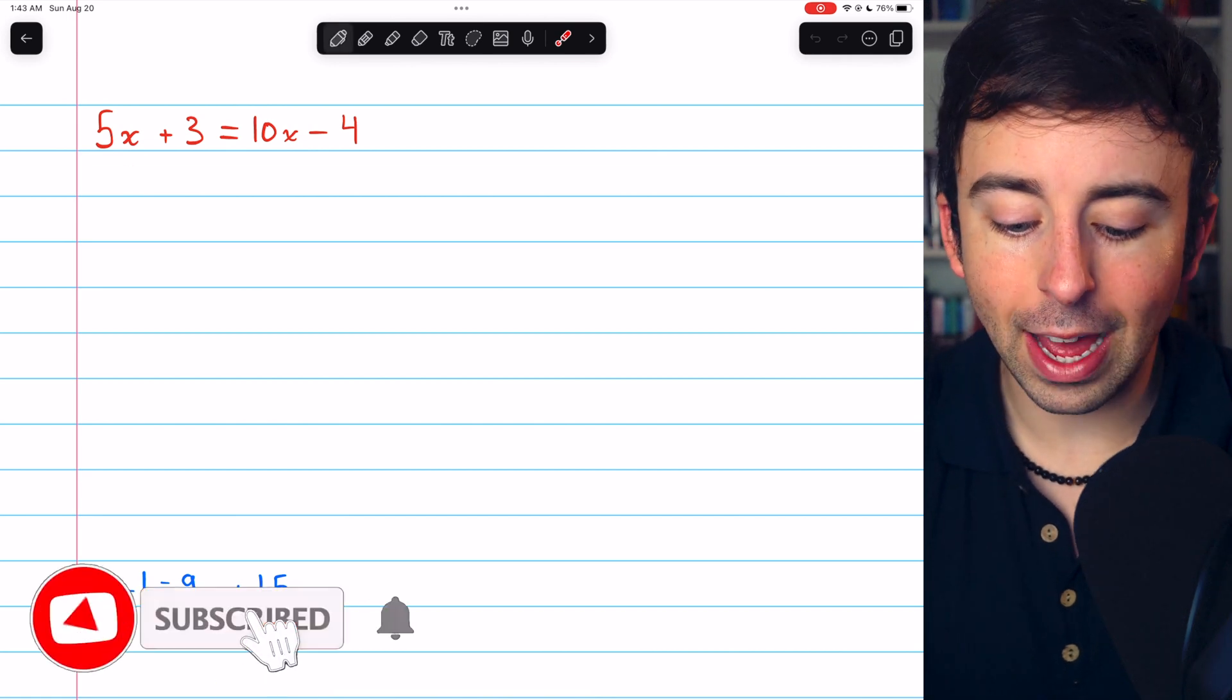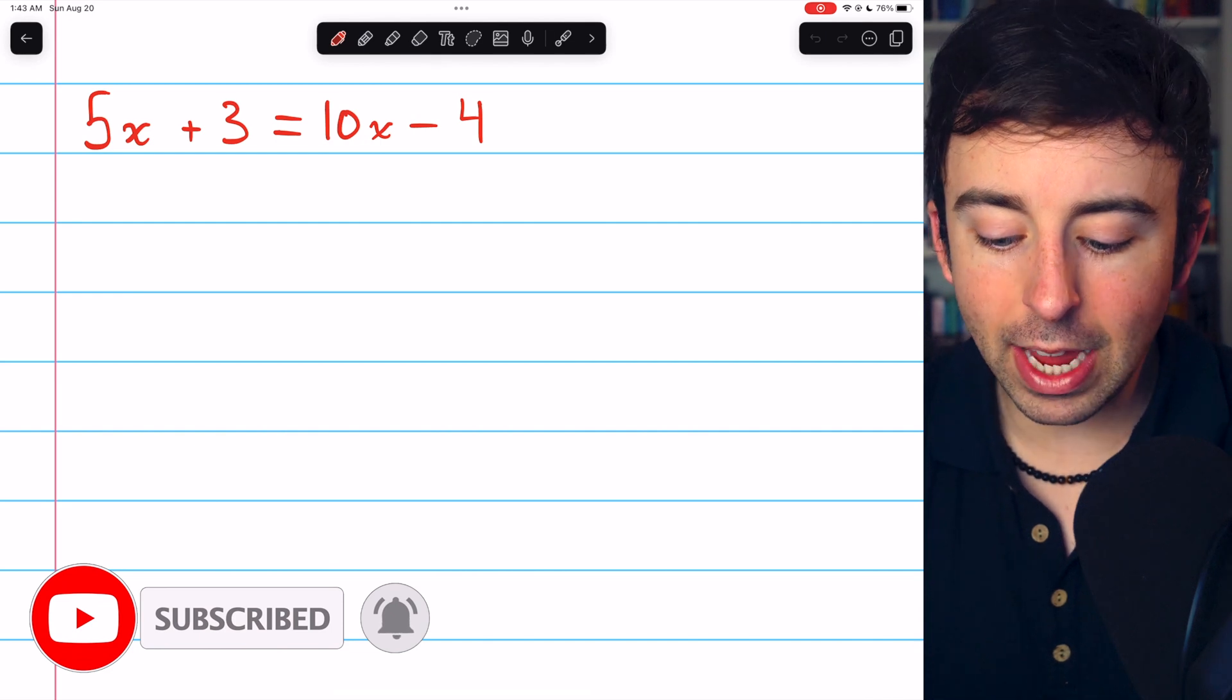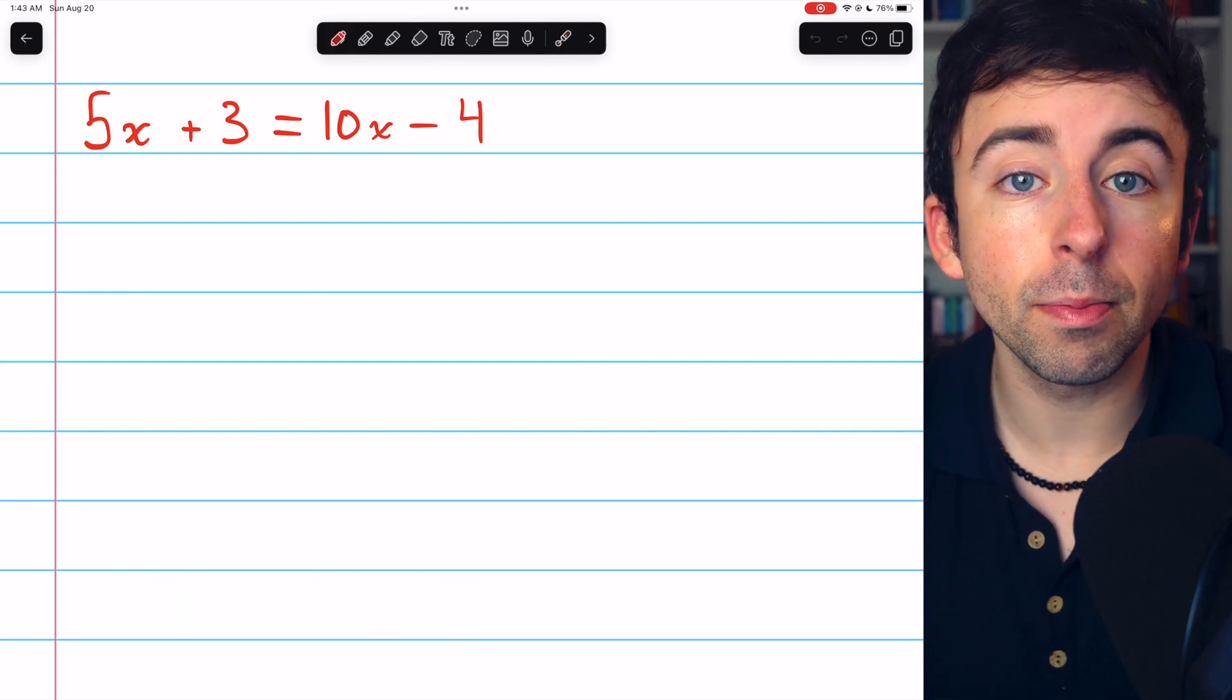Let's do a couple of examples to learn how to solve equations with variables on both sides, beginning with 5x plus 3 equals 10x minus 4.